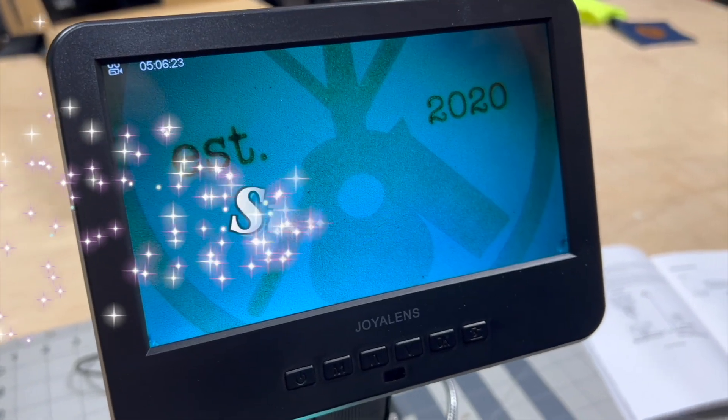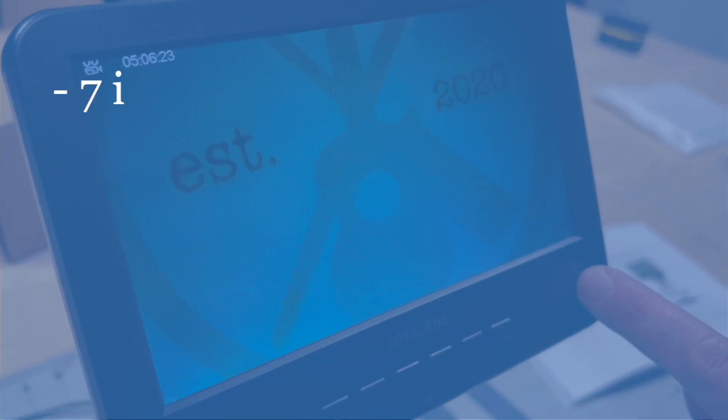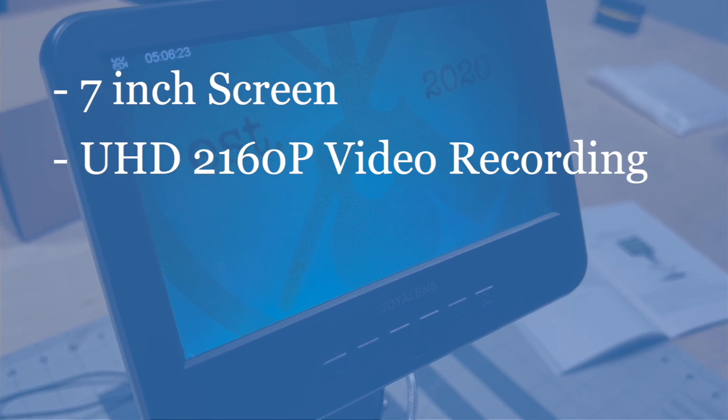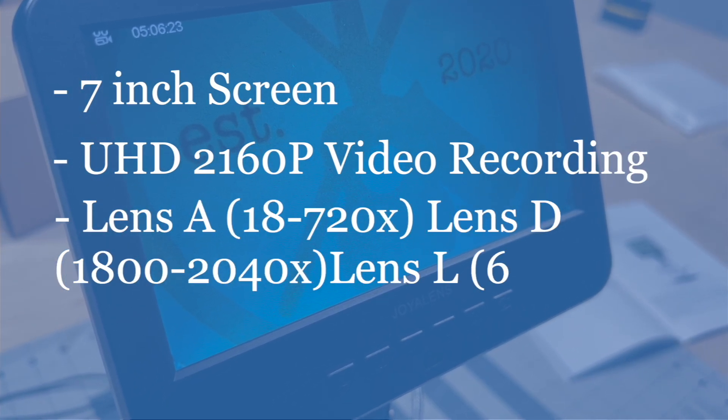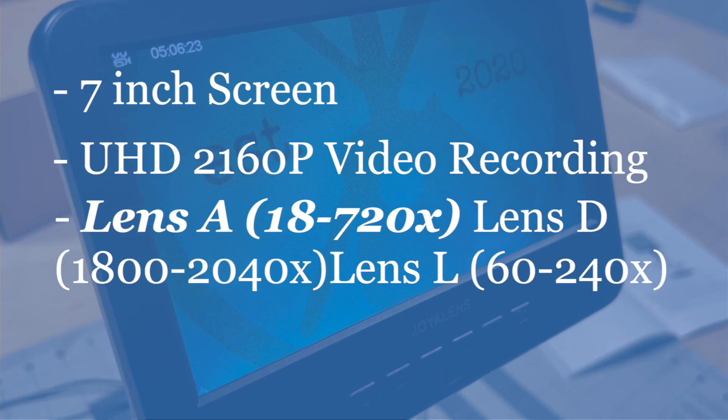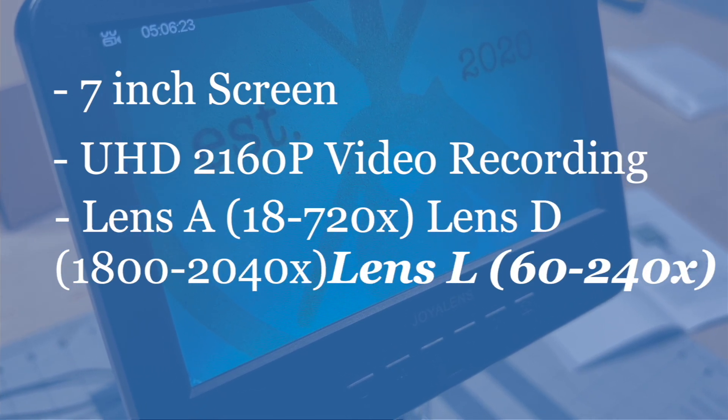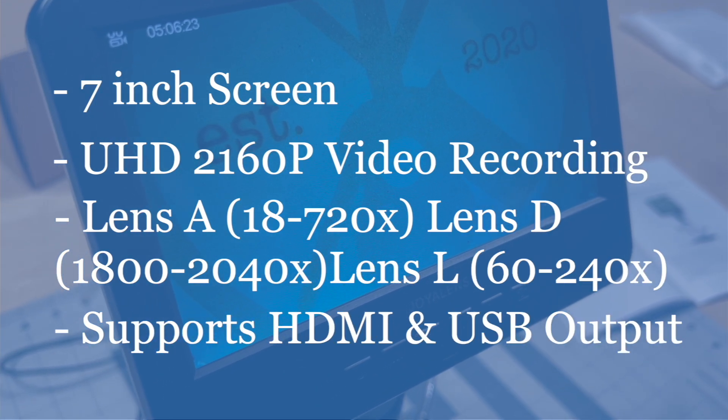So let's talk some statistics of this particular digital microscope. So you get a 7 inch color screen, this is ultra HD so it's 2160p resolution. You get three lenses. Again, one is 18 to 720 times, one is 1800 to 2040, and one is 60 to 240. Again, you can export the video out to a computer.